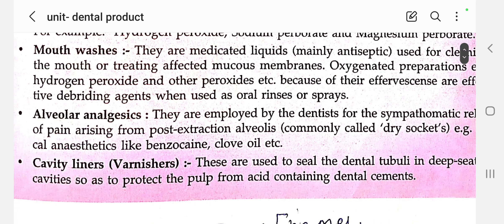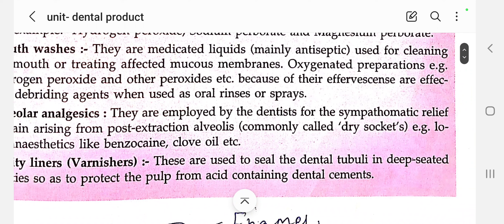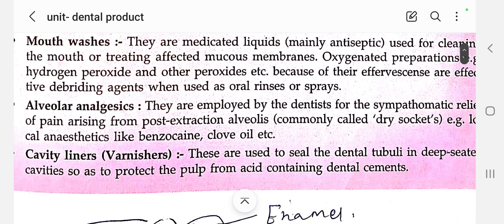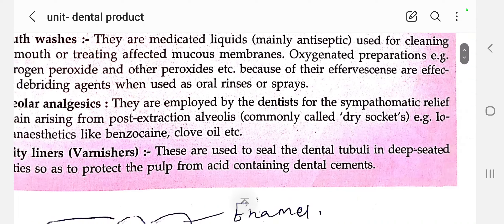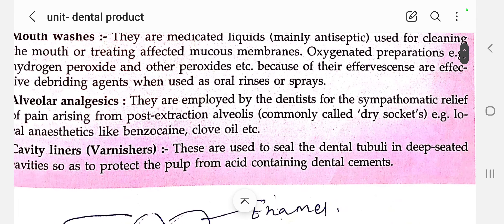Next, alveolar analgesic. These are employed by the dentist for the sympathomimetic relief of pain arising from the post-extraction alveolus, commonly called dry socket. Examples include local anesthetics like benzocaine and clove oil. Clove oil — or even clove powder — can be placed where pain is produced in your teeth as a home remedy. Benzocaine is an analgesic, meaning it relieves pain.